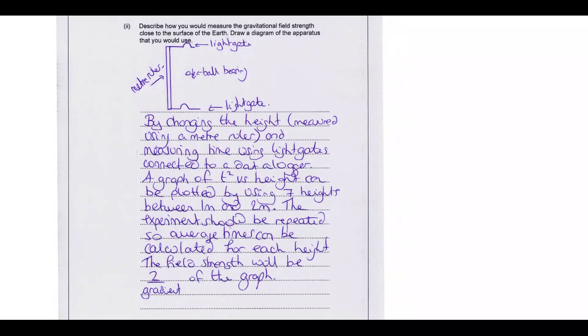So in terms of the first one, looking at a setup, the best way to do this would be using light gates, or you can use a magnet and a trap door, some way of having improved accuracy in your time measurement. So that's the first thing looking for in the diagram. They were also looking for your measuring devices, so identifying using a light gate and a timer and a meter ruler for distance.